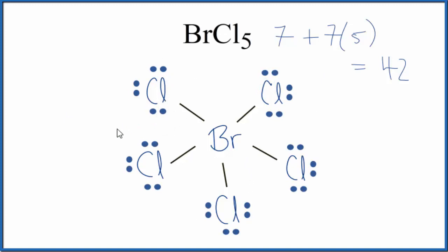The bromine, we said that can have an expanded octet, but we have 42. So we still have two valence electrons and we need to put them somewhere. Makes the most sense to just put them on the central bromine here. So we'll just put them right here on the bromine.